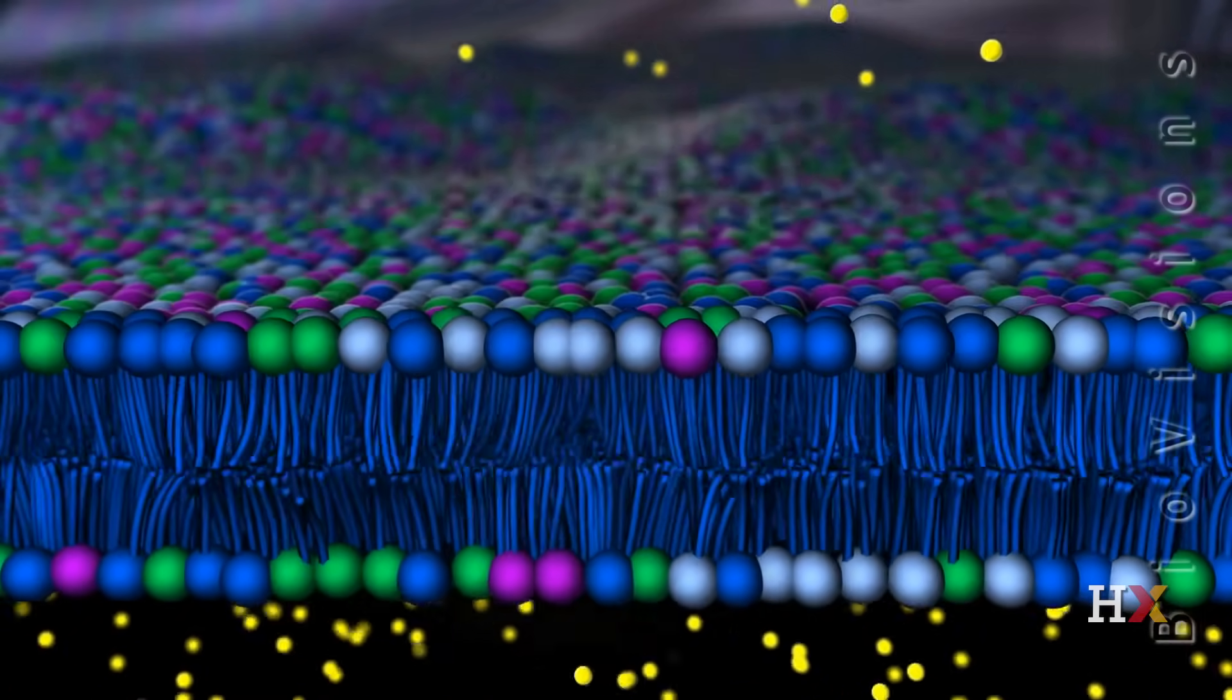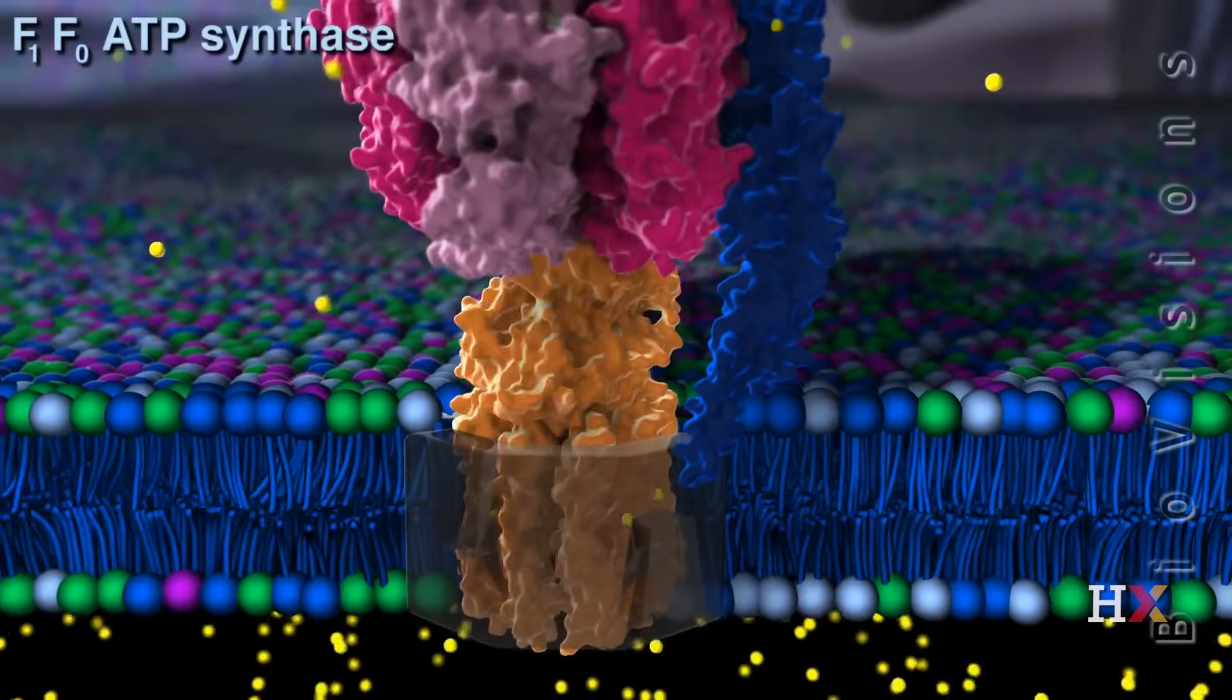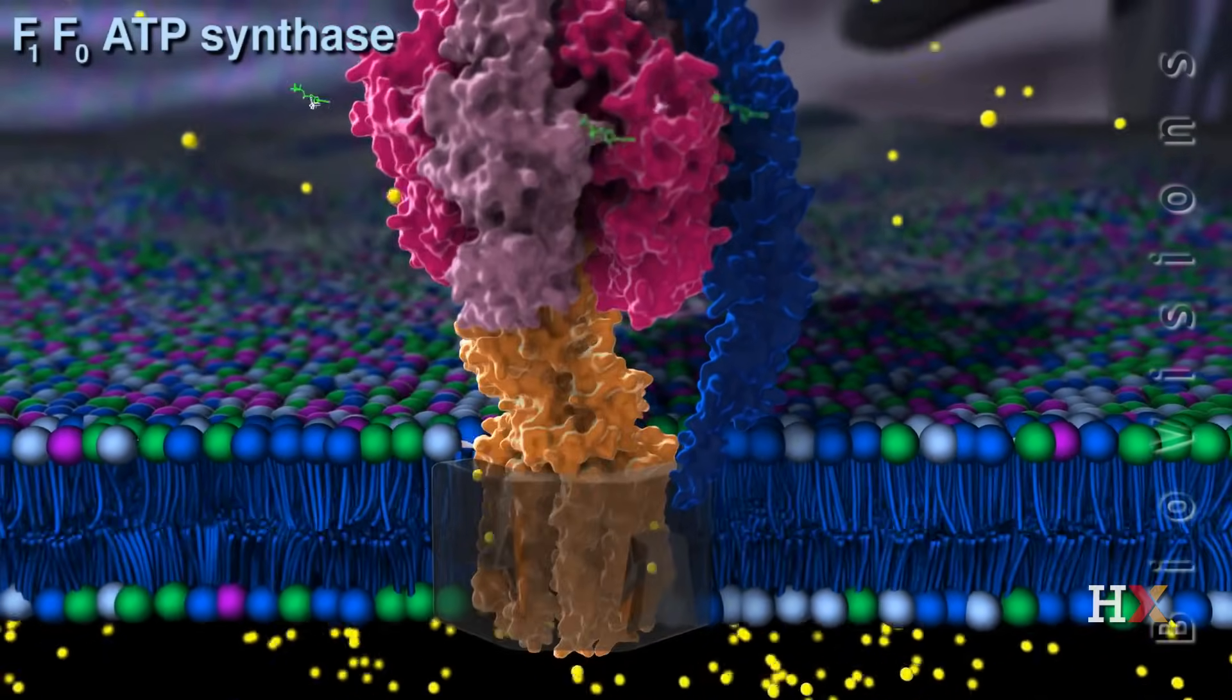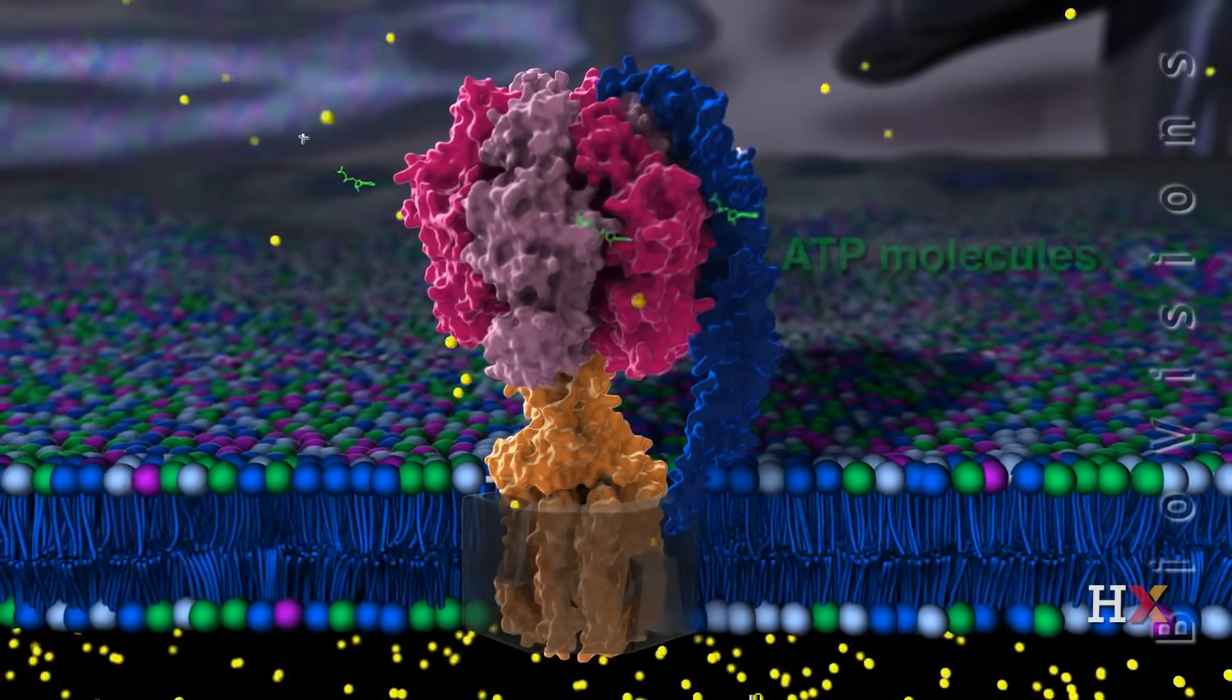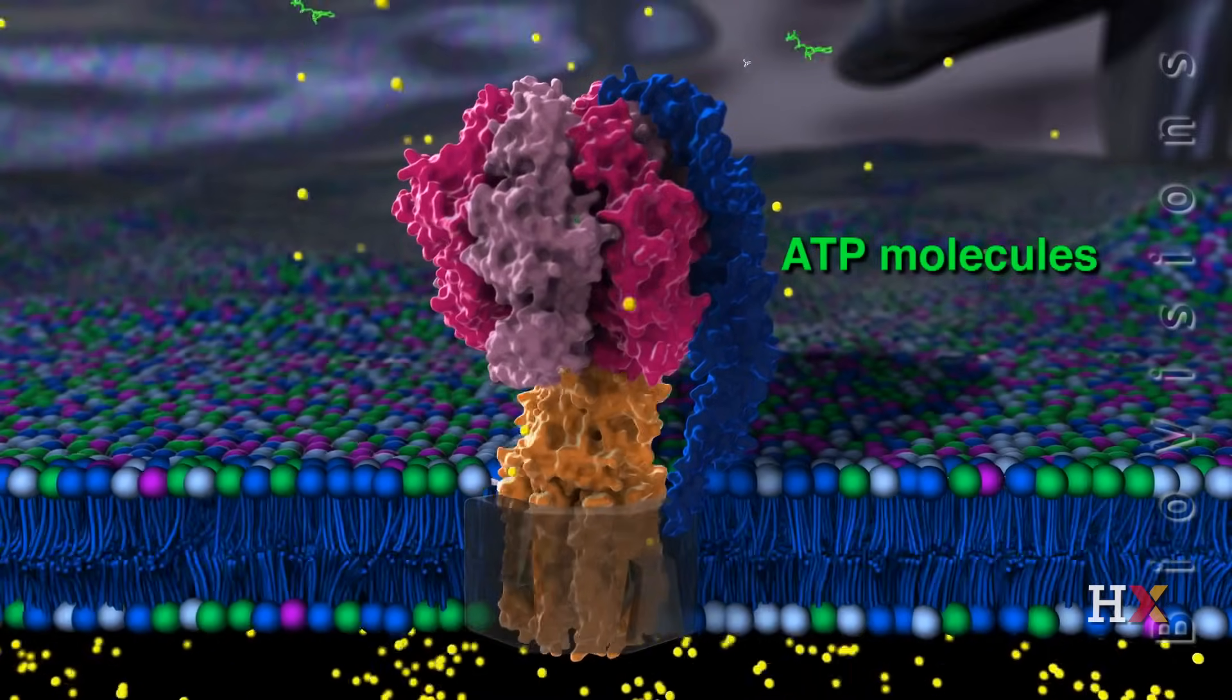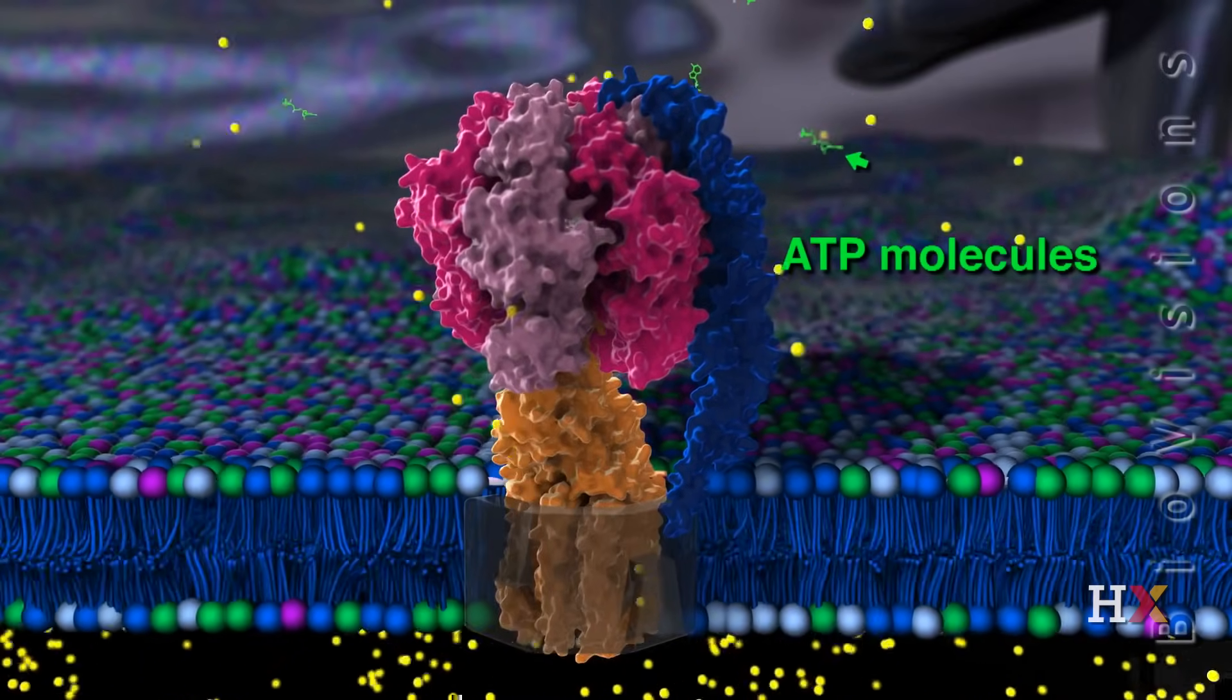The membrane also contains a large protein complex called F1-F0 ATP synthase, which uses the proton gradient to drive the synthesis of ATP molecules. These ATP molecules ultimately provide the energy for most of the cell's reactions.